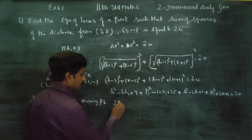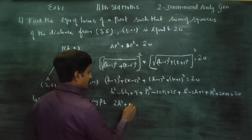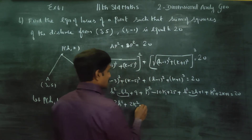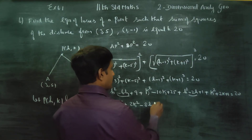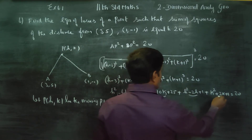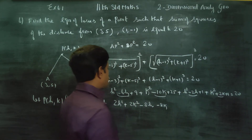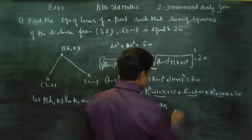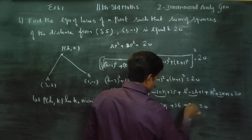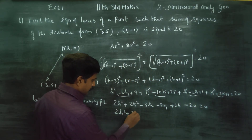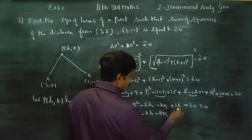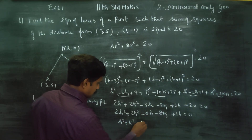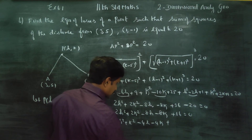H² add to H² gives 2H². K² add to K² gives 2K². For H terms: minus 6H plus minus 2H gives minus 8H. For K terms: minus 10K plus minus 2K gives minus 8K. Numbers will be 25 plus 9 is 34, plus 1 plus 1 is 36. Now, 2H² plus 2K² minus 8H minus 8K plus 36 equals 20, then plus 16 equals 0.